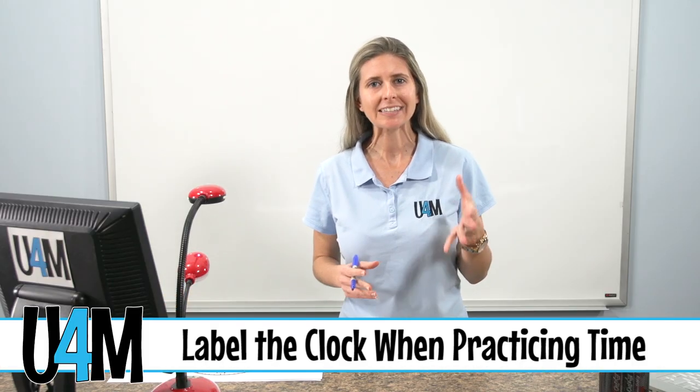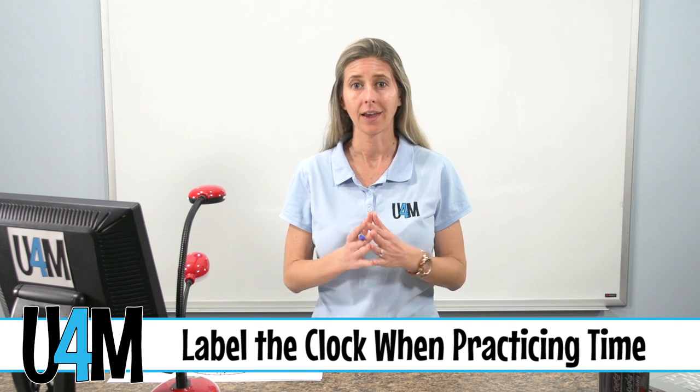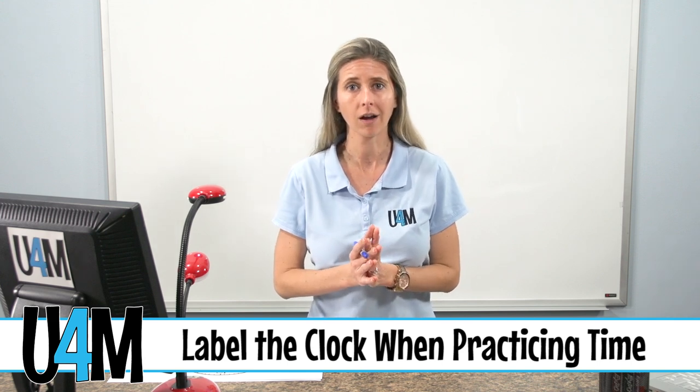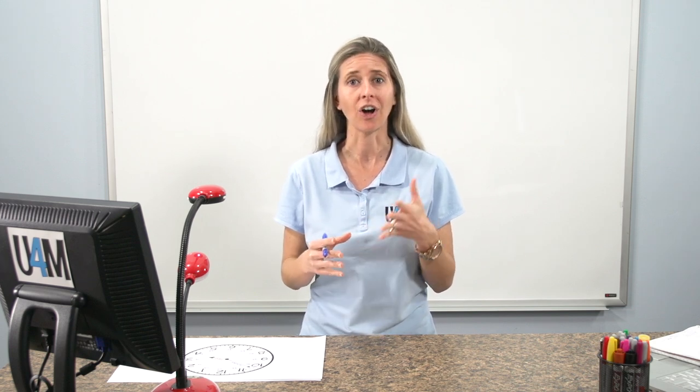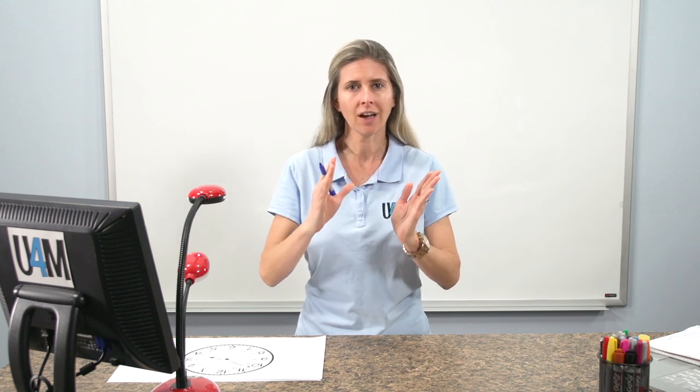So remember, when telling time to the nearest minute, it helps to label a few things on our clocks. For one, label the hour and the minutes hand. The shorter hand is the hour and the longer hand is the minutes. And then I always recommend to go ahead and label those five-minute increment marks. So then, when we go to tell time to the nearest minute, we can dash our lines out to those five-minute intervals and then label those numbers in between.